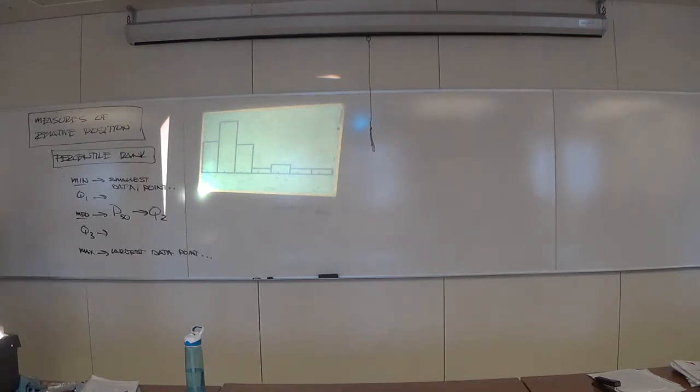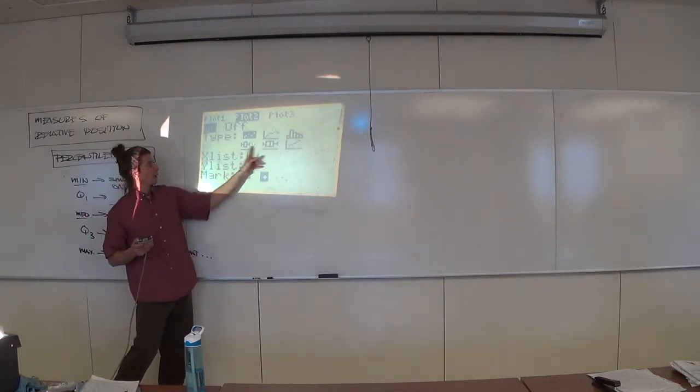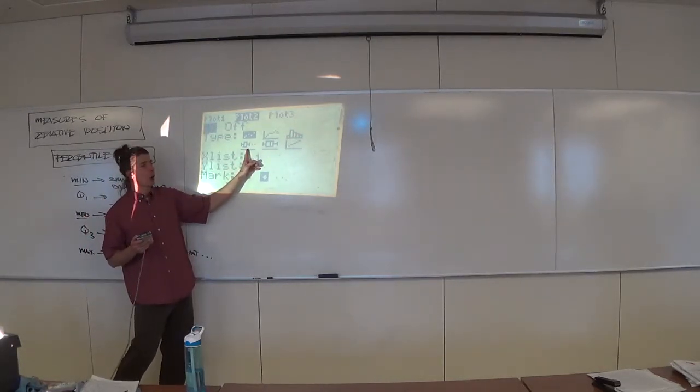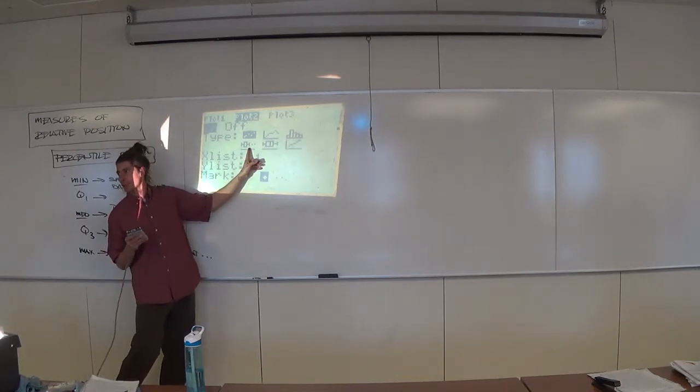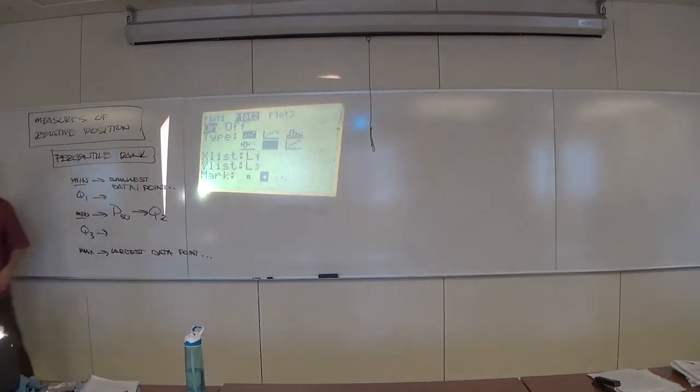But what I want to do now is let's slap the box plot on with that. So go back to second y equals. Leave plot 1 alone. We want that up there. Go to plot 2. Turn it on. And select that you have two choices in box plot. You've got this guy and this guy. This one's called modified. Hold off on him for just a moment. We'll come back to him. If not today, definitely on Tuesday. But jump down to this one.